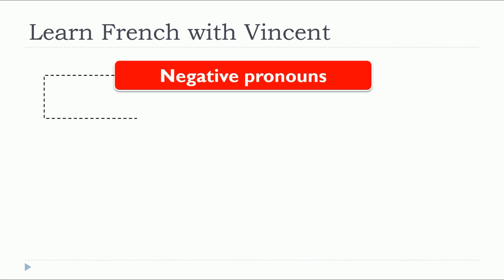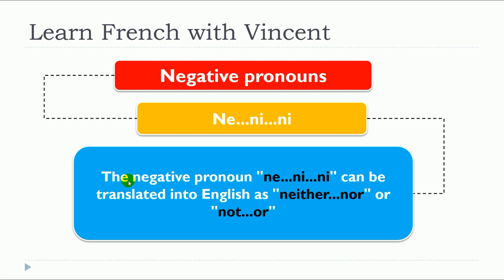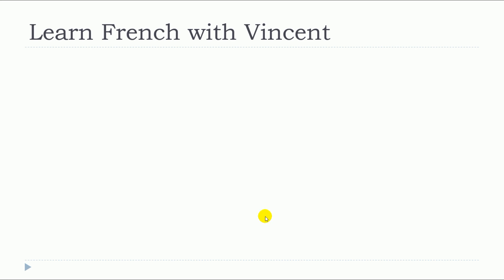This lesson is about ne...ni...ni. The negative pronoun ne...ni...ni can be translated into English as 'neither...nor,' or 'not...or.'